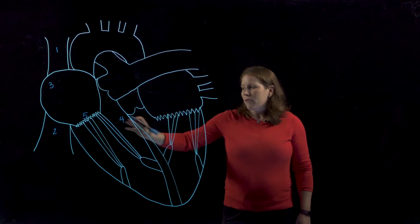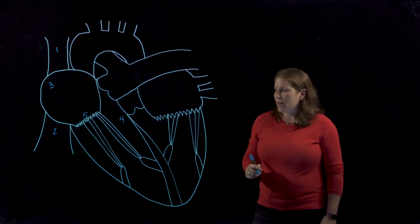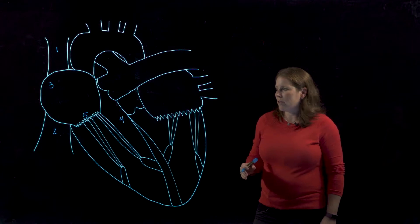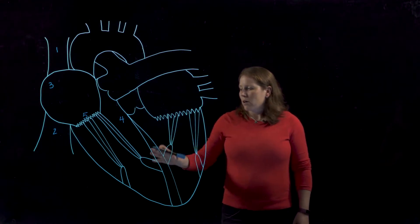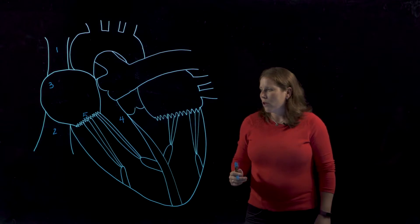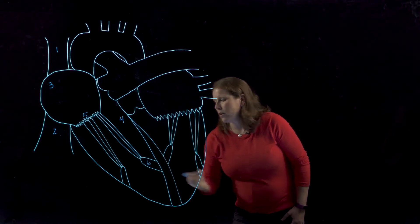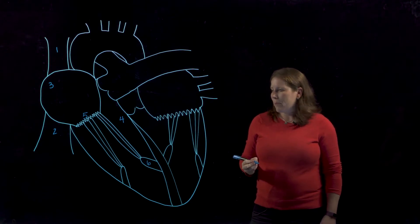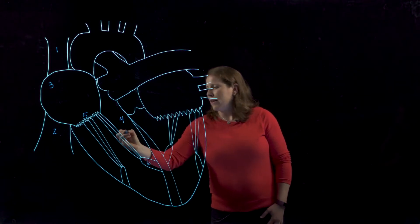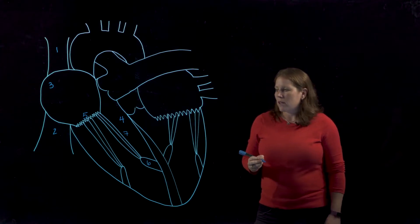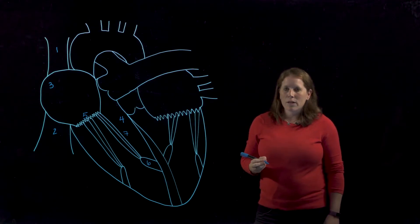These valves do have cusps and in this case there are three cusps. We haven't really drawn that full anatomical detail here but these cusps are anchored to the wall of the ventricle through these two anatomical structures. These structures here are called papillary muscles and they are attached to these heartstrings properly known as chordae tendinae.